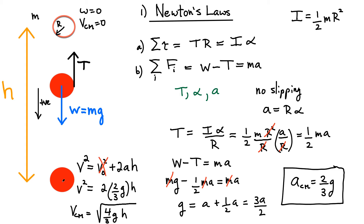That's how fast the center of mass is moving after you drop a yoyo a certain height h. Notice that it's slower than if you were to drop it in free fall without the rope attached. In that case, you would find that the velocity of the center of mass is the square root of two g h, which is bigger than our result.